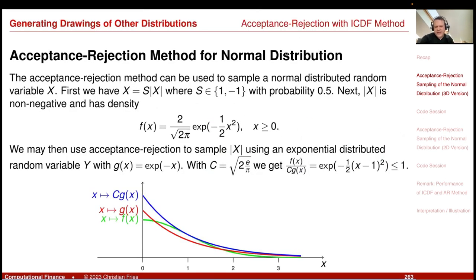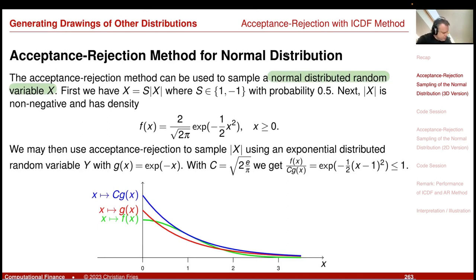So here's the idea, which you also find in some textbooks. My aim is to sample a normal-distributed random variable x. The first trick is that I apply acceptance-rejection to the absolute value of x — only the positive part. So what is the density of the random variable |x|?